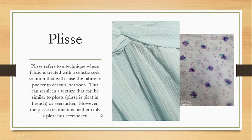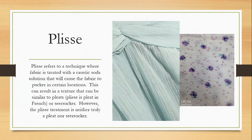Plissé refers to a technique where fabric is treated with a caustic soda solution, causing the fabric to pucker in certain locations. We can apply this in many different ways — sometimes the plissé treatment results in what looks like a pleated fabric, and plissé means 'pleat' in French. Or it can look like a seersucker. However, the plissé treatment is neither truly a pleat nor truly a seersucker.